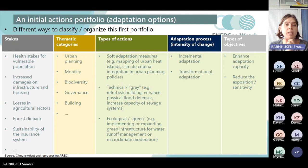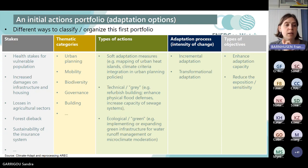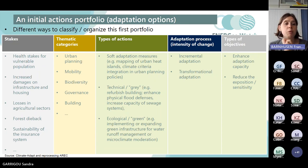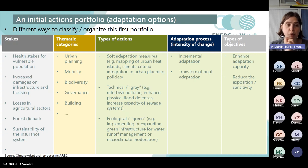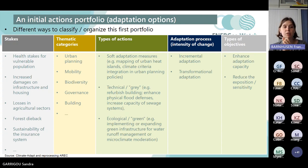First of all, you can ask yourself: what are the stakes that these actions relate to? Do we want to implement measures which will have positive impacts on the health of vulnerable populations? Do we want to address damages to critical infrastructure? Do we want to address losses in the agricultural sector? Concretely, what are the different stakes identified in our vulnerability assessment, and what measures can we take to address them? This is a first way of categorizing, which directly relates to the vulnerability assessment exercise.